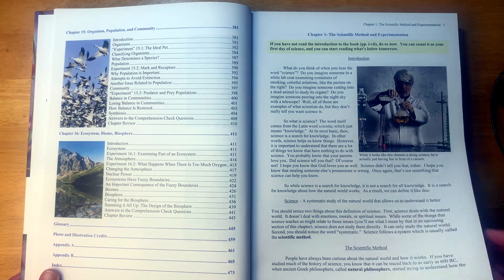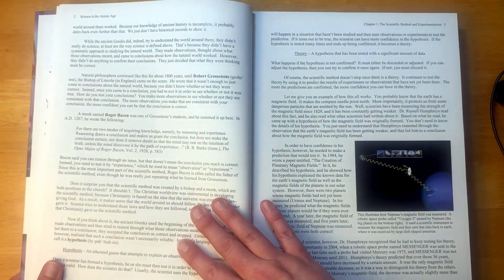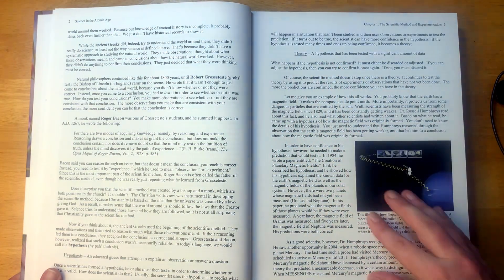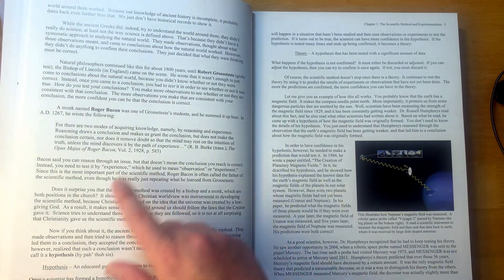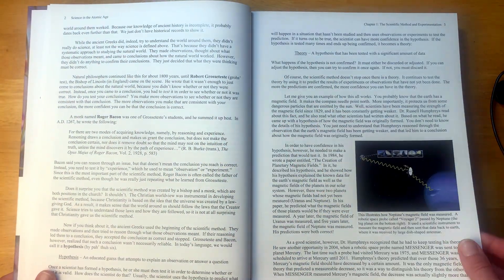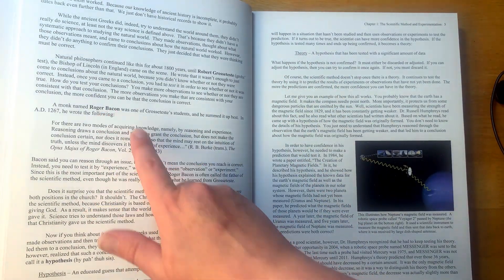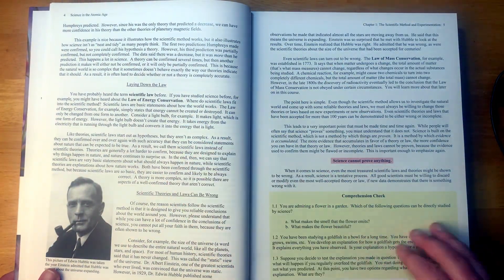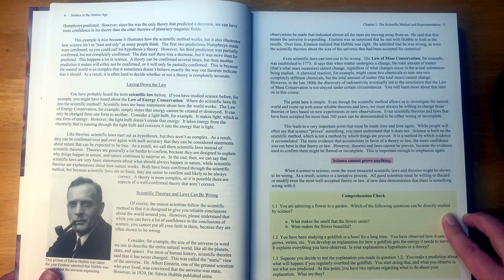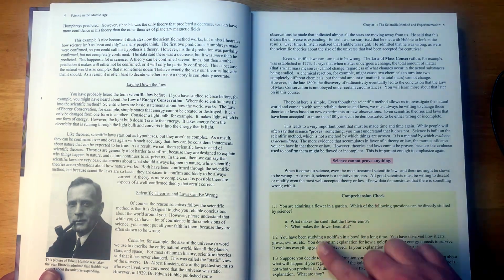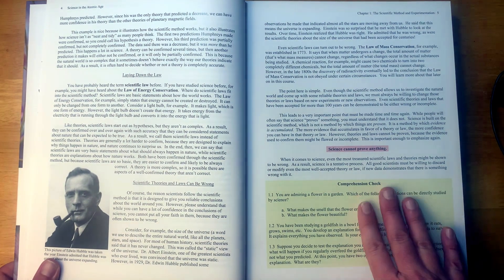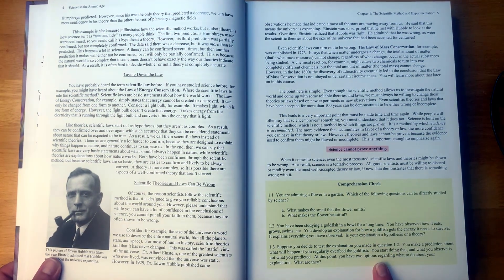All right. So here is the beginning of chapter one. So I'm just going to flip through this so you can take a look. I see some definitions here. So underlined definitions here. We have some bolded names of scientists. Some bold words here. And then we have a comprehension check here.